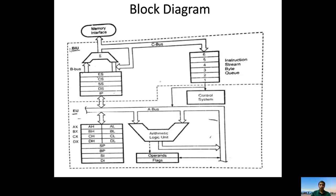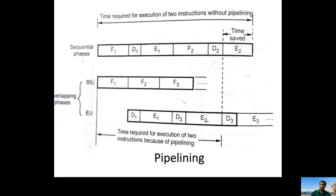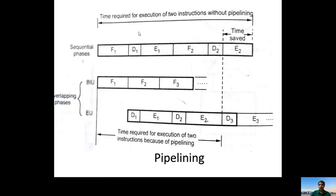Now let us look at pipelining, which was mentioned in the features of 8086. The 8086 uses a pipelining mechanism. To understand this, let us compare it with the 8085 microprocessor. In 8085, 'F' indicates fetching, 'D' indicates decoding handled by the control system, and 'E' indicates execution. So for each instruction, the sequence is: fetch, decode, execute.